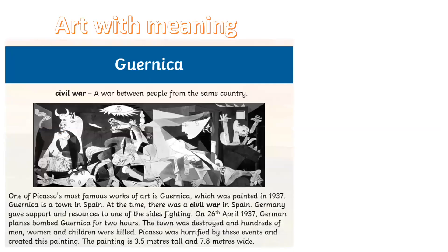Art with meaning: Guernica. Civil war is a war between people from the same country. One of Picasso's most famous works of art is Guernica, which was painted in 1937. Guernica is a town in Spain. At the time there was a civil war in Spain. Germany gave support and resources to one of the sides fighting. On the 26th of April 1937, German planes bombed Guernica for two hours. The town was destroyed and hundreds of men, women and children were killed.